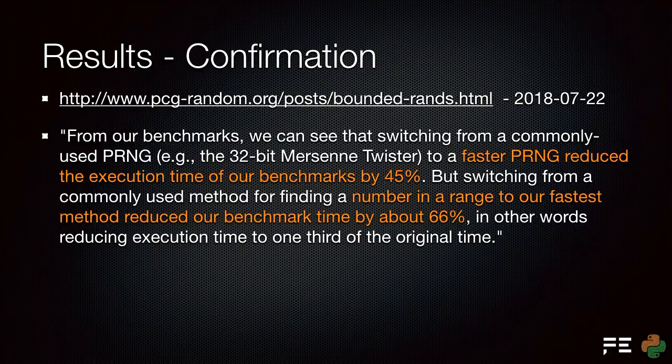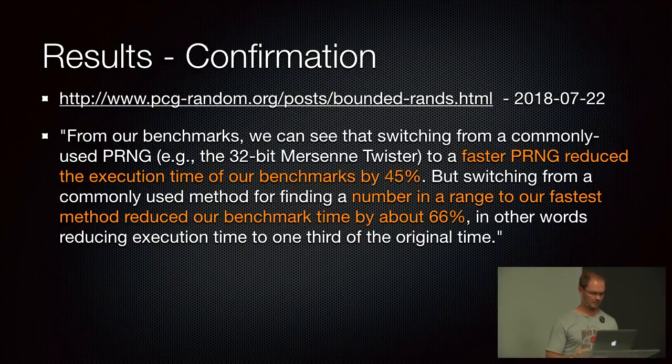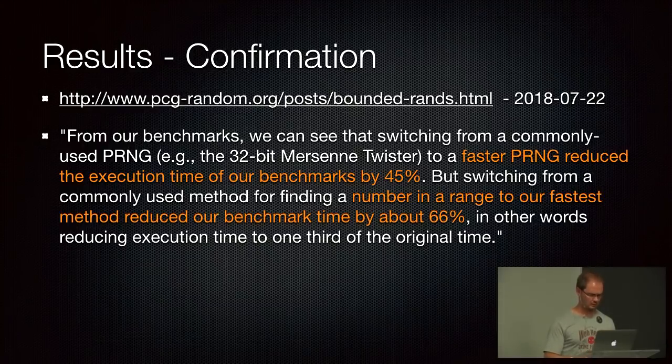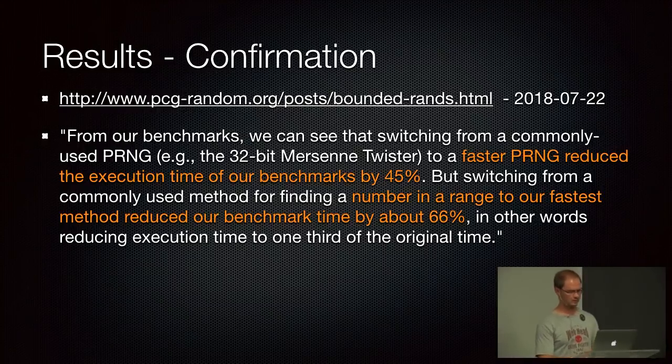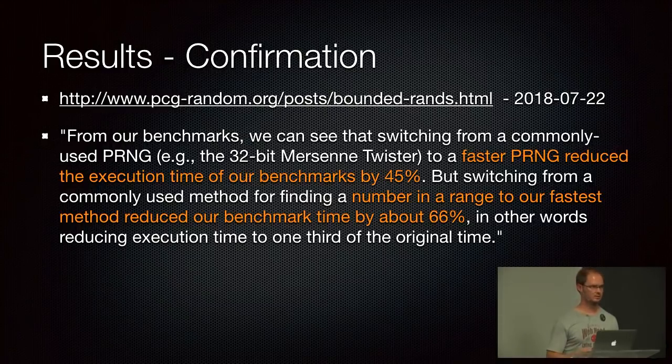And luckily there's been a confirmation of my results. It's not just me that measured this. There was another post on the PCG random blog on bounded random numbers. And they measured that if you used a faster random number generator, the underlying random number generator, you can get up to 45% reduction in execution time. So it's again, it's more than double performance. So hopefully when this goes into randomgen and eventually into NumPy, you'll all be able to generate numbers at least twice as fast as you can generate numbers now. Thank you.